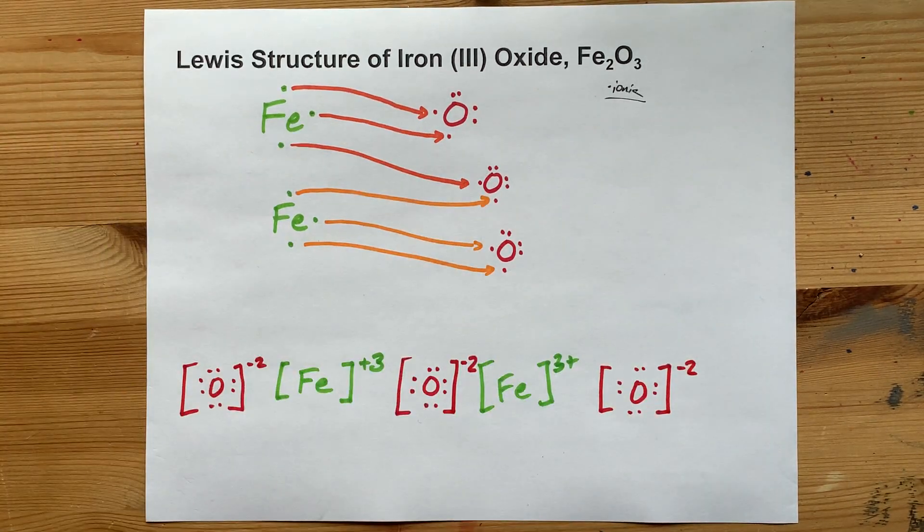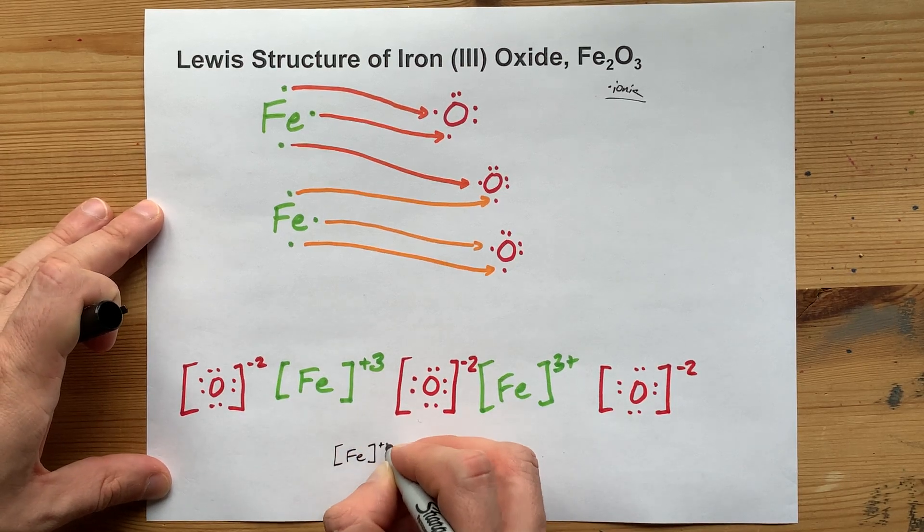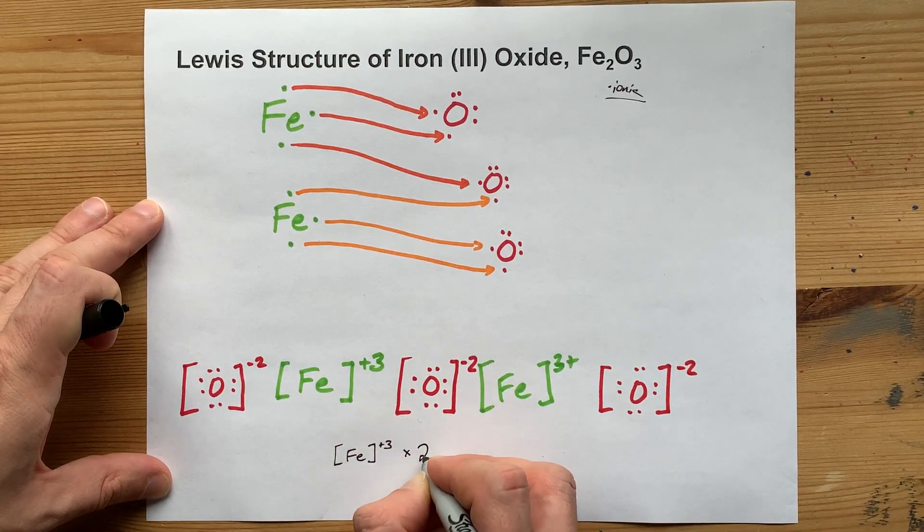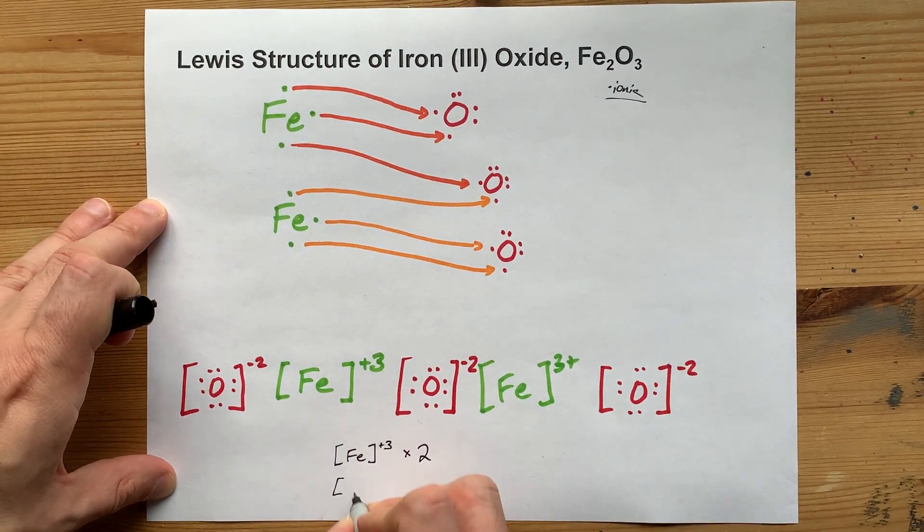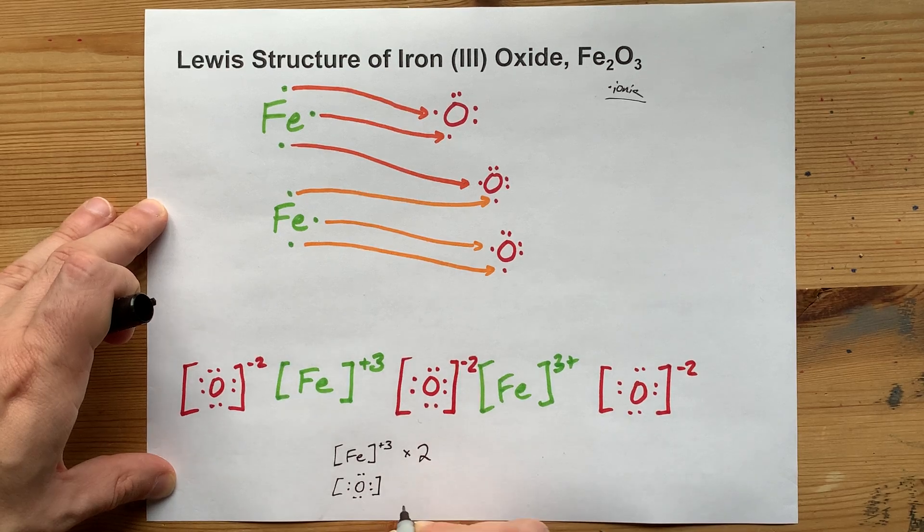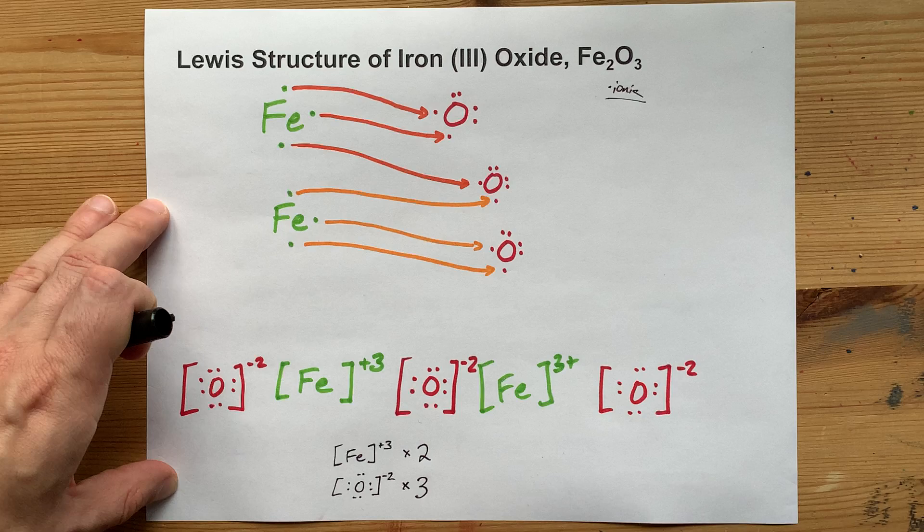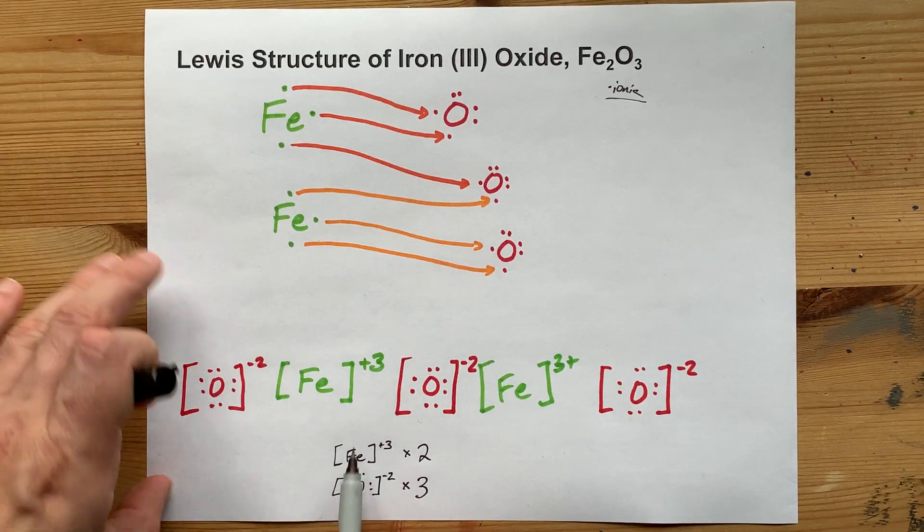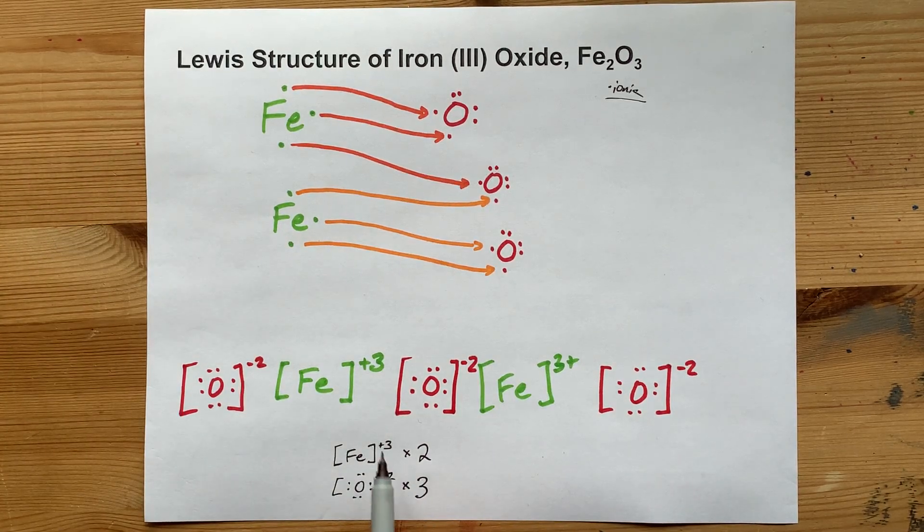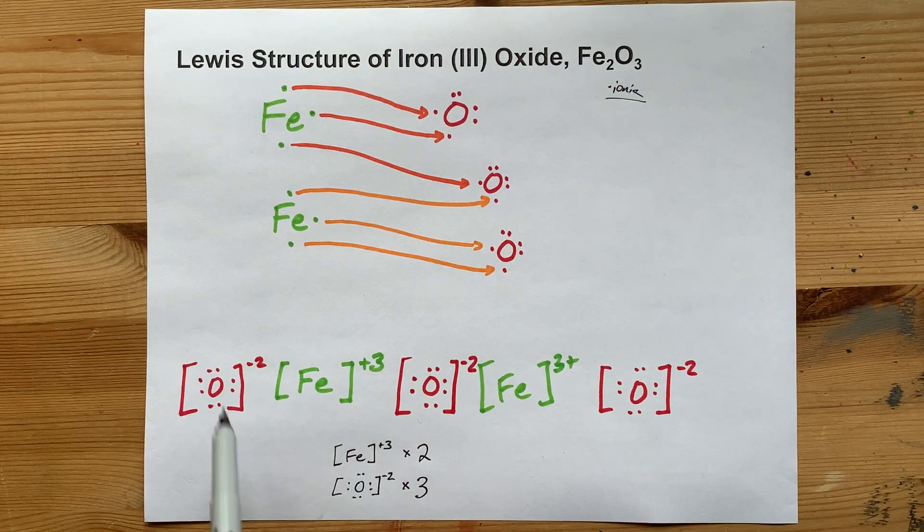Now, you might be allowed to take a shortcut and simply draw yourself Fe with the plus 3 charge, times 2, because there are 2 of them. And the O, with its 8 electrons in its outer shell, the minus 2 charge, and there are 3 of them. Now, this still demonstrates that you know what the ions are and how many there are and what its charge is, but, you know, ask your teacher if you get full marks for that.